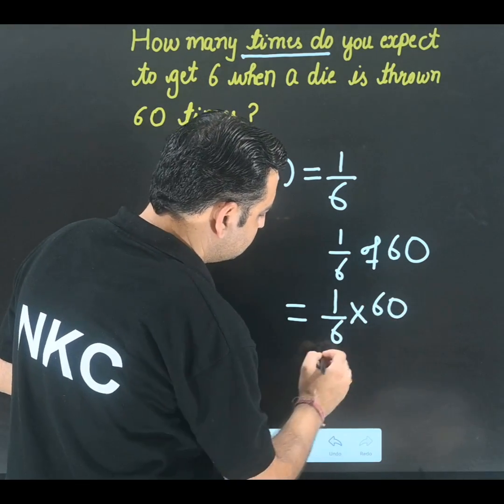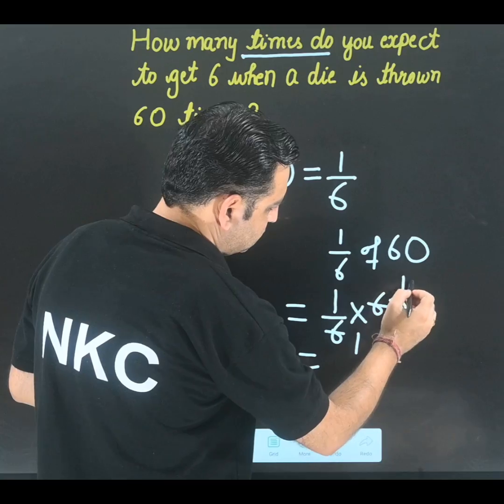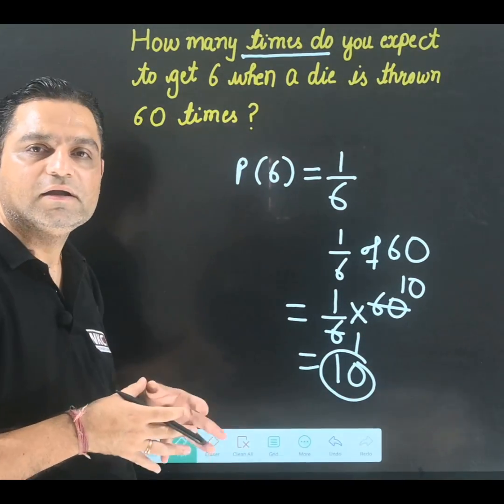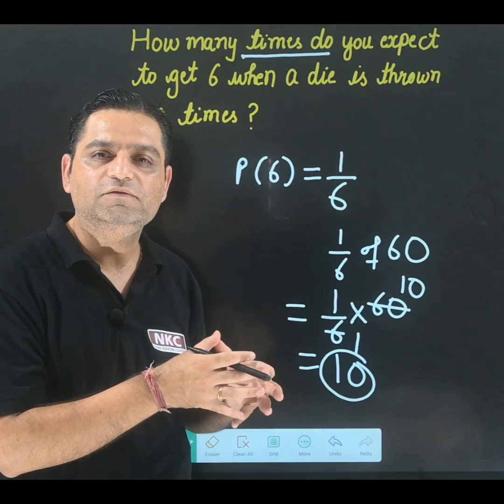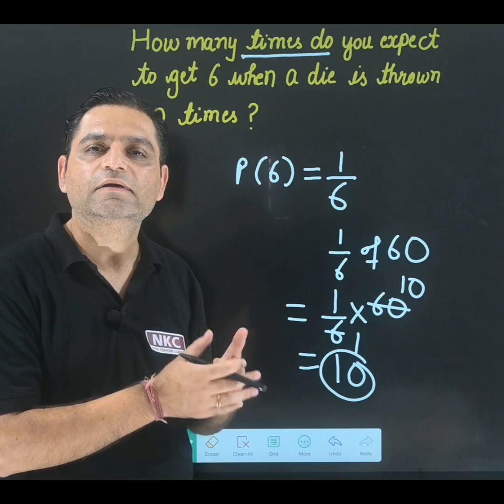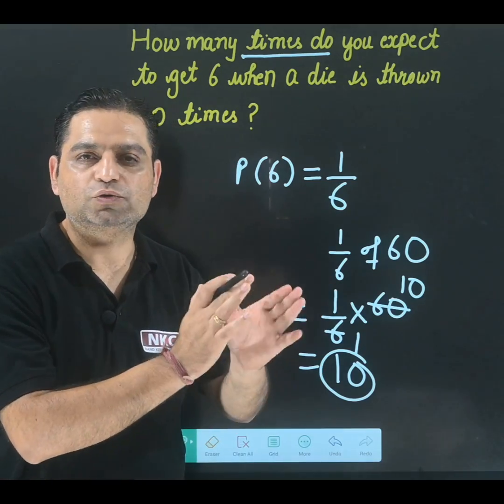That means you will cancel 6 and 60. Your answer will be 10. That means if my die is thrown 60 times, then what I am expecting according to the probability topic, 10 times 6 should come.